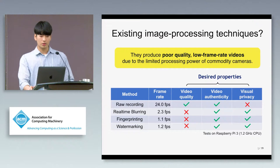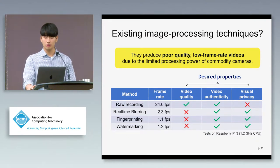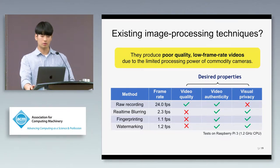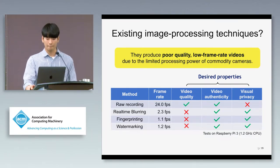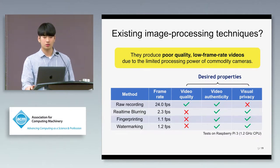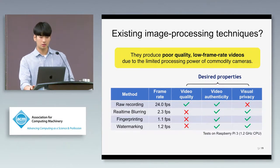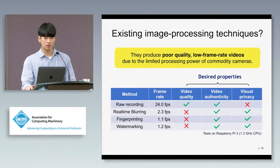We also experimented other techniques such as video fingerprinting and watermarking over real-time video stream on a Raspberry Pi. They all produce poor quality low frame rate videos due to the limited device capabilities.